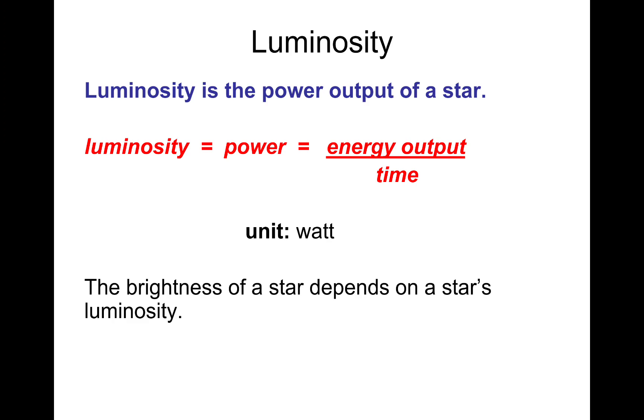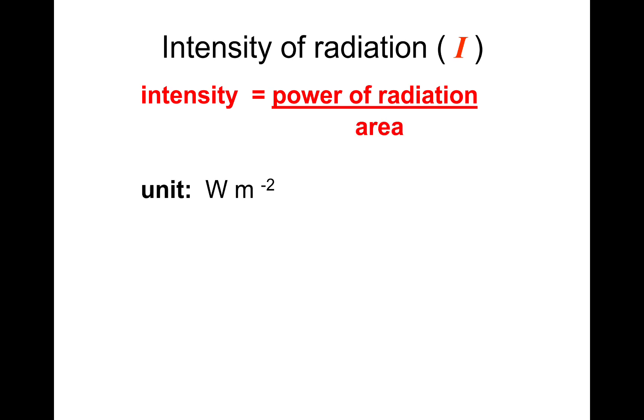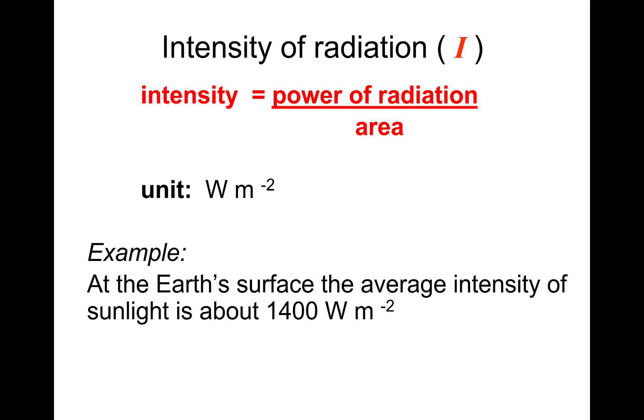Alright, so I'm going to give you another equation which you probably already know. So intensity of radiation. Intensity is equal to power over area, and the unit is watts per square metre. And an example of this: at the Earth's surface, the average intensity of sunlight is about 1,400 watts per square metre, or 1.4 kilowatts per metre square.